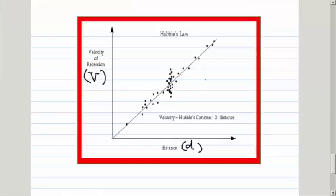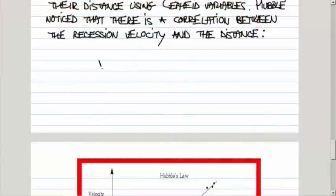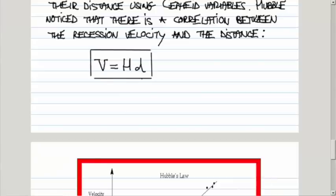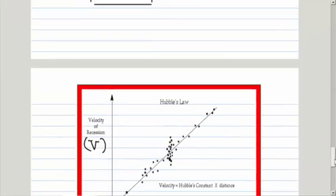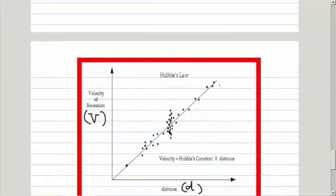If you triple the distance, the recession velocity is tripled. The recession velocity is some constant that now bears his name times the distance. This relationship is known as Hubble's law, where this constant H, called Hubble's constant, is basically just the slope of this straight line.